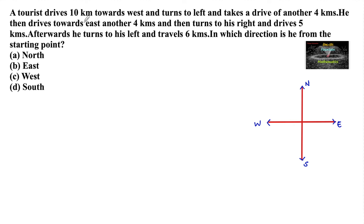A tourist drives 10 km towards west and turns to the left and takes a drive of another 4 km. He then drives towards east another 4 km and then turns to his right and drives 5 km. Afterwards he turns to his left and travels 6 km. In which direction is he from the starting point?